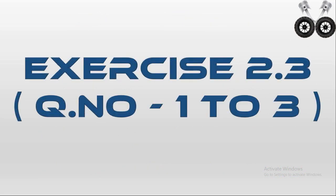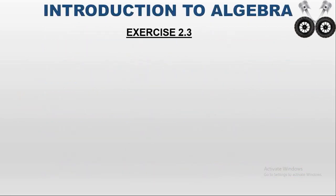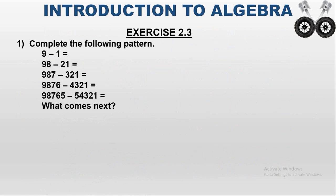Part 1, Exercise 2.3. The first question is to complete the following pattern: 9 minus 1 equals, 98 minus 21 equals, 987 minus 321 equals, 9876 minus 4321 equals, 98765 minus 54321 equals. What comes next?